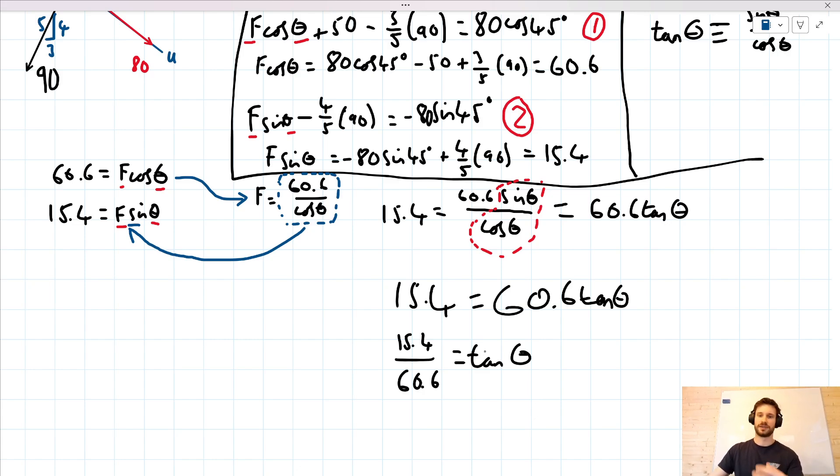And we can take the inverse tan of both sides. So that will give us theta is equal to the inverse tan of 15.4 over 60.6. Which when I bang in my calculator, I get a value of 14.26. I didn't need the decimal places there, but whatever. 14.26 degrees. Okay. That's our value for theta.